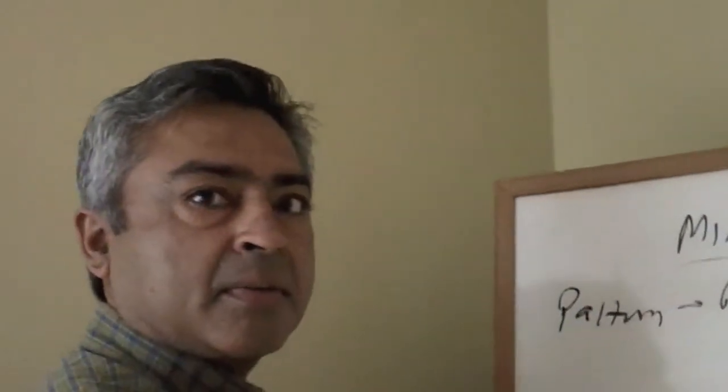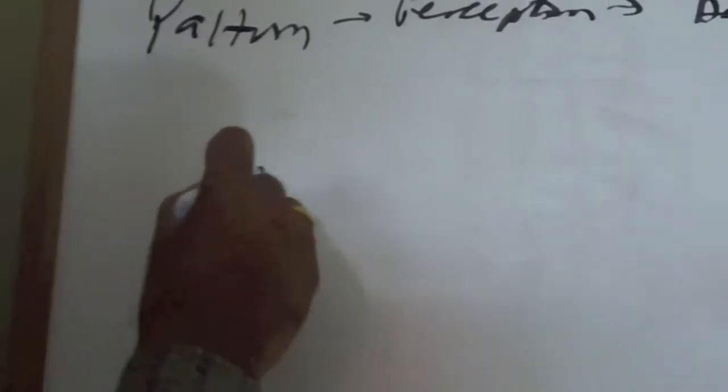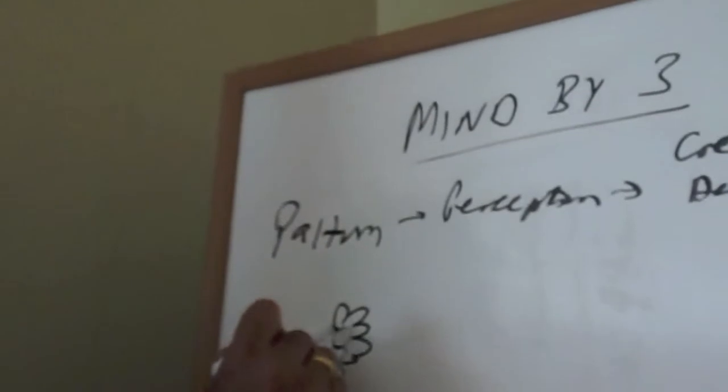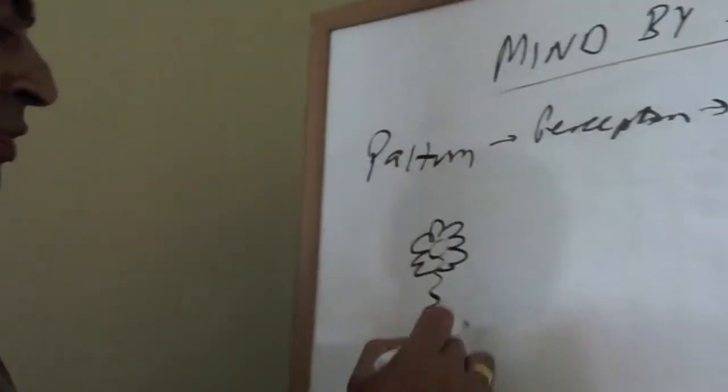This pattern is represented by the growth of a seed into a flower. So there's a seed, there's some growth, and it culminates in this flower. And if we analyze this pattern, there's three phases to it.